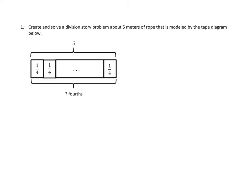Let's look at the first problem. Create and solve a division story problem about 5 meters of rope that is modeled by the tape diagram below. Let's look at the tape diagram. We have a whole of 5 and it's being broken down into quarters or fourths. We don't know how many.